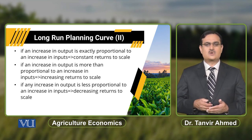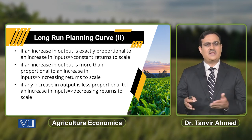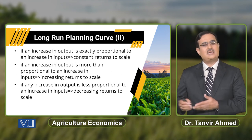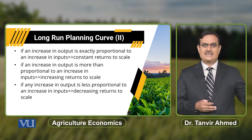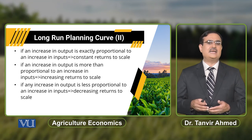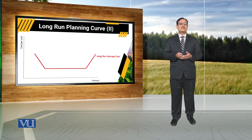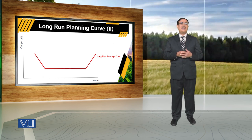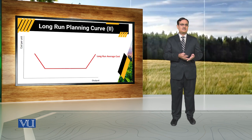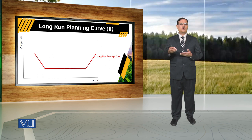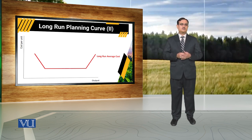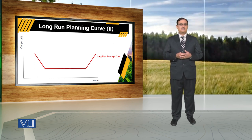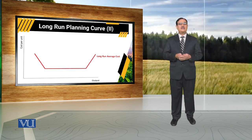जब आपके पास long run average cost एक rising trend में हो, वह होगा when farmer is operating under decreasing returns to scale — all inputs are increased by 20% लेकिन output में increase by less than 20%. यह जो long run average cost decrease या increase हो रही है, that is because of returns to scale. Agriculture की cases में क्या होता है — longer run average cost curves are usually L-shaped. During initial phase of the production process there is rapid decline in average cost to produce agricultural output, और जहाँ यह rapid decline हो रहा है, firm is operating under increasing returns to scale.